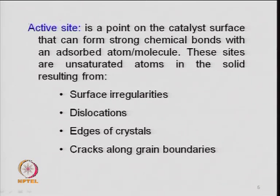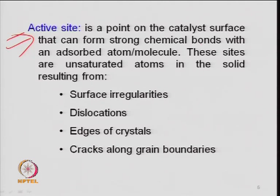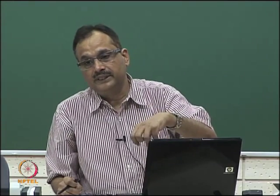The active site is most crucial — you may have given enough metal concentration on your support but it may not be active. That is related to dispersion, which we will talk about later. Basically the active site is a point on the catalyst surface that can form a strong chemical bond with an adsorbed atom or molecule. This definition will be used throughout the course — whenever you have a catalytic reaction, we talk in terms of adsorption of a species A, surface reaction, and then desorption of the product, all happening on the active site.